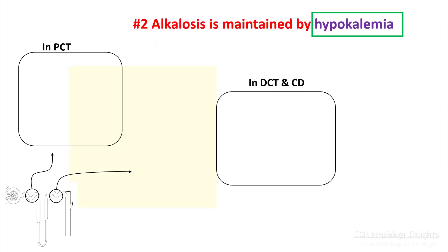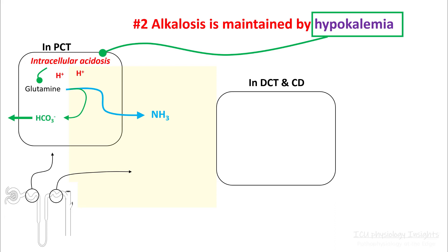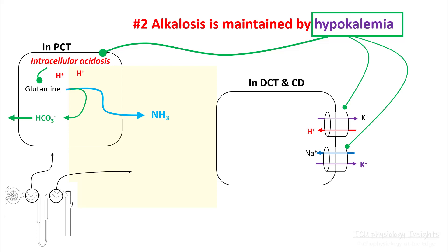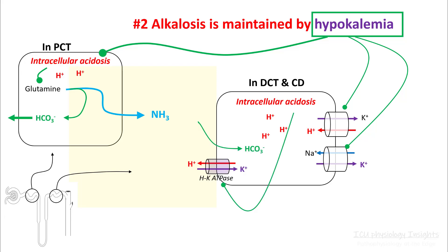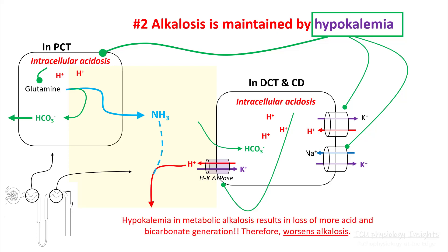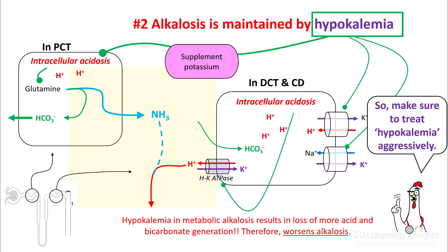Alkalosis is maintained by hypokalemia. Low potassium causes intracellular acidosis, and in the proximal convoluted tubule it results in formation of ammonia, which is coupled with generation of new bicarbonate. In the DCT and collecting duct, it stimulates the hydrogen-potassium exchanger, resulting in intracellular acidosis. Intracellular acidosis stimulates the hydrogen-potassium ATPase and results in more hydrogen excretion. So hypokalemia and metabolic alkalosis result in loss of more acid and bicarbonate generation, which perpetuates alkalosis. Make sure that you treat hypokalemia aggressively.